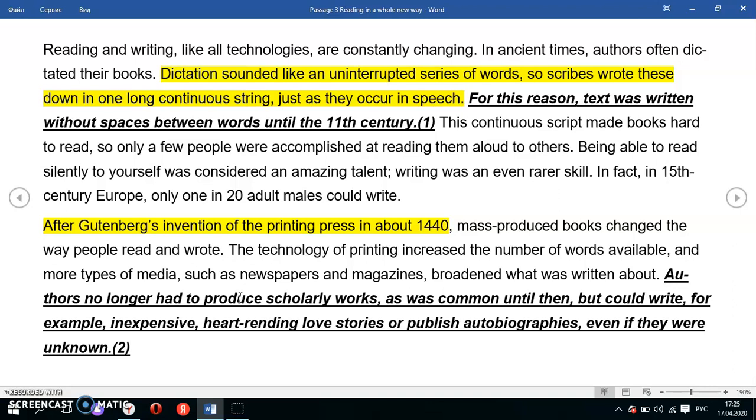Authors no longer had to produce scholarly works, as was common until then, but could write, for example, inexpensive hard-rending love stories or publish autobiographies even if they were unknown. So after the invention of printing press, mass production of books started and authors didn't have to produce only scholarly works or scientific pieces of writing. They had more choice - they could start writing love stories.